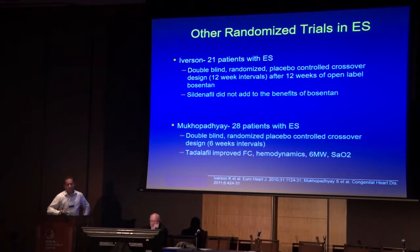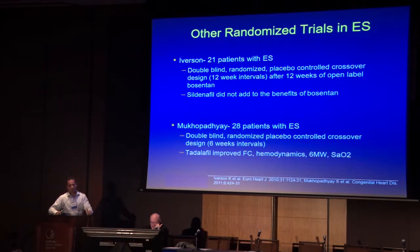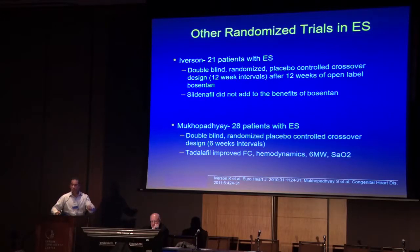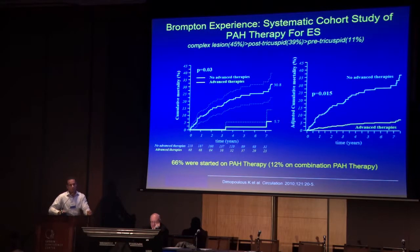The only other two randomized trials in Eisenmenger's are double-blind crossover design studies. The Iversen study put patients on bosentan for 12 weeks then crossed over with sildenafil — sildenafil did not add benefit to bosentan. The other study of 28 patients compared placebo versus tadalafil, and tadalafil actually improved functional class, hemodynamics, six-minute walk, and oxygenation, providing data for a PDE5 inhibitor in this population.